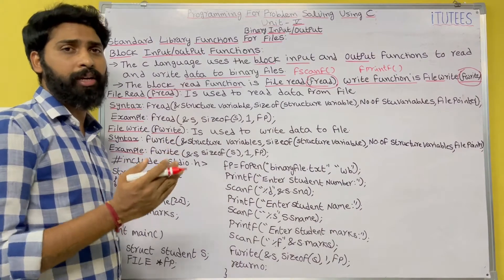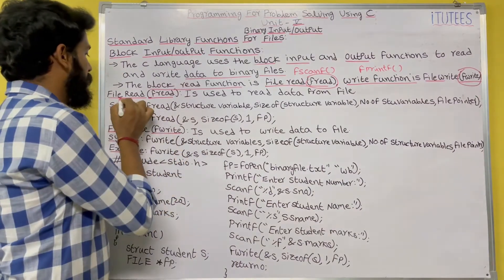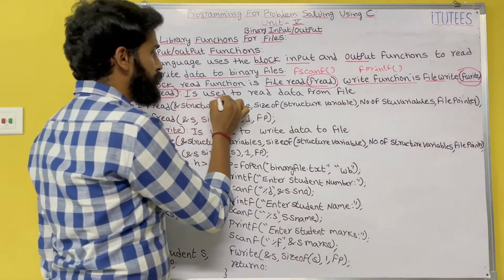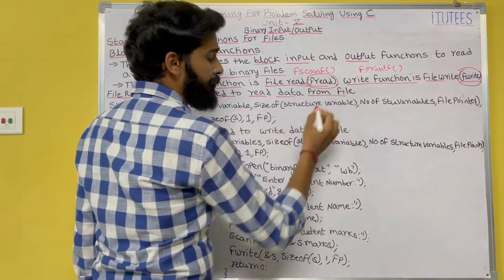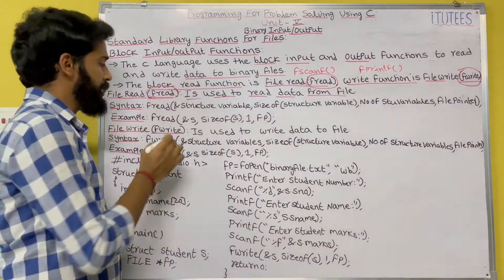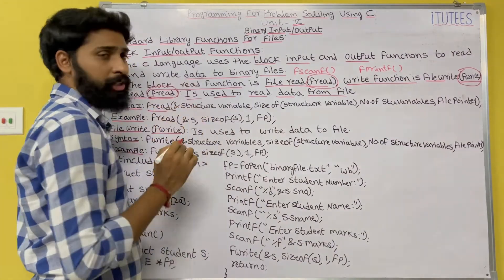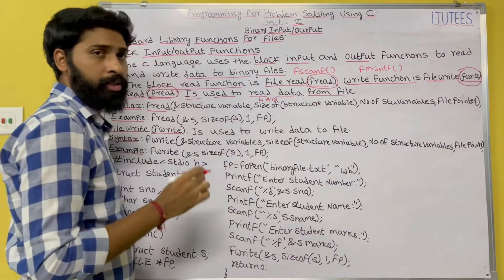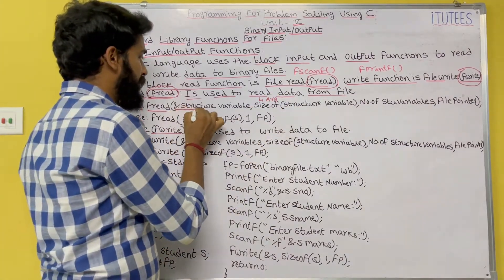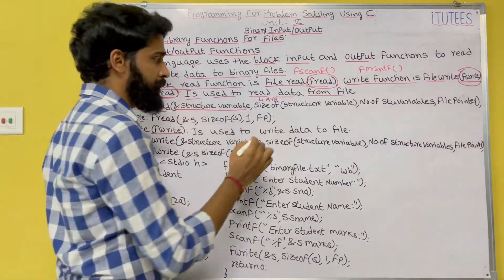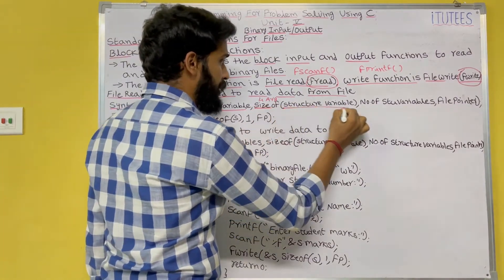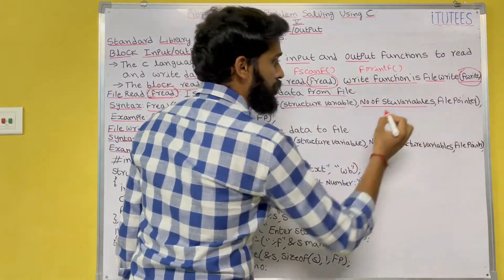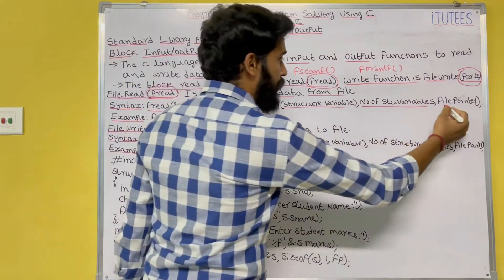Now we see how to write data onto binary files. The fread function is used to read data from a file. The syntax of fread has four arguments: the first is the address of the structure variable, the next is the size of the structure variable, then the number of structure variables, and finally the file pointer.